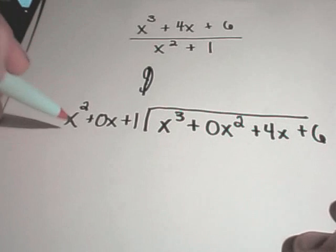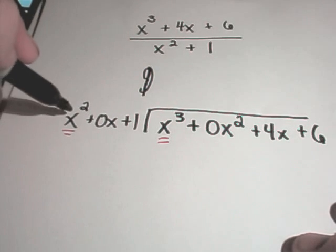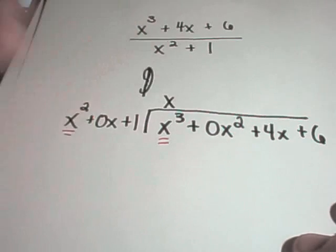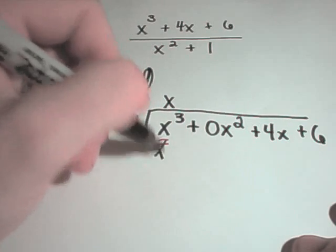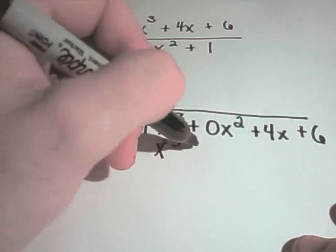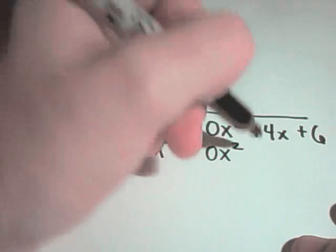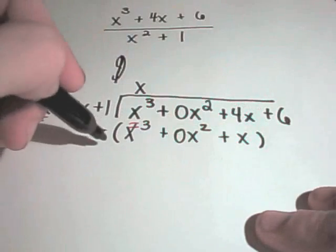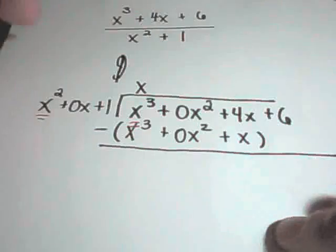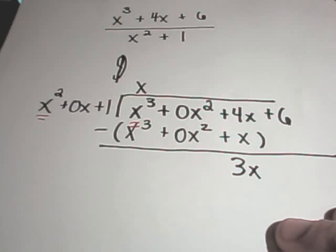And now I just do the same thing as before. I look at my first term and my first term, and I think x squared times what is x cubed? Well, I would need an x to the first. And then I simply multiply everything out front. x times x squared is x cubed, x times 0x is 0x squared, x times 1 is positive x. I subtract things away, and in this case, I'll get 4x minus x, which is 3x. And then I'll simply drop my plus 6 down.